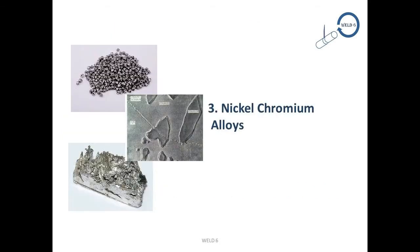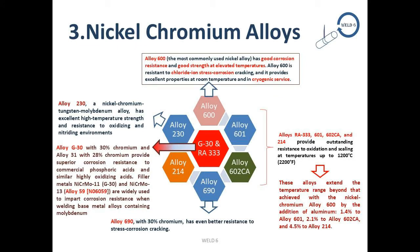The nickel-chromium alloy group includes Alloy 600, 601, 602CA, 690, 214, 230, G30 and Ra333. Alloy 600, the most commonly used nickel alloy, has good corrosion resistance and good strength at elevated temperatures. It is resistant to chloride ion stress corrosion cracking and provides excellent properties at room temperature and in cryogenic environments. Alloy 690 with 30% chromium has even better resistance to stress corrosion cracking.